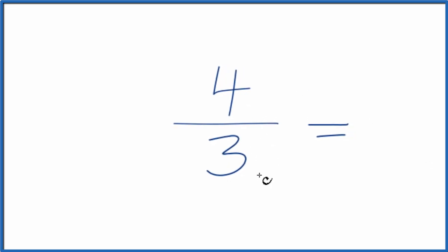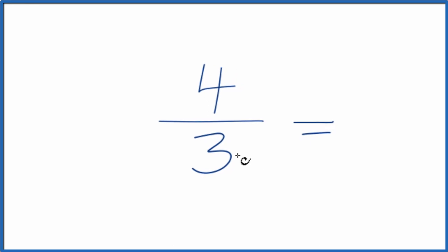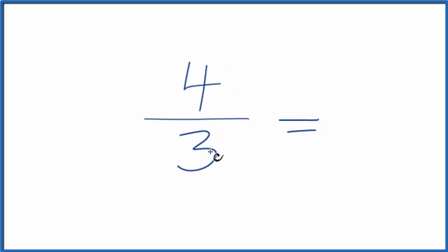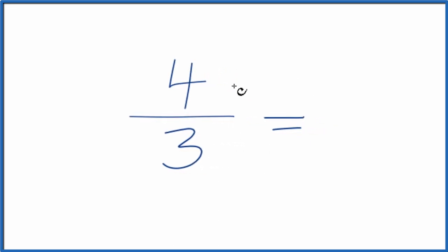So when we look at 4 and 3, we want to find a common factor, something that goes into 4 and 3. But the only number that goes into both 4 and 3 is 1. So divide 4 by 1, you get 4. Divide 3 by 1, you get 3. 4 thirds. So it's the same thing we started with.